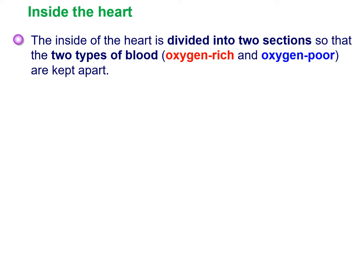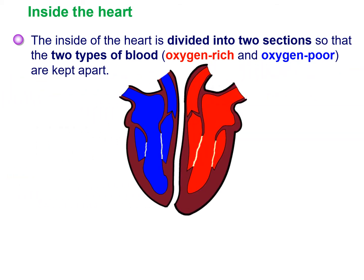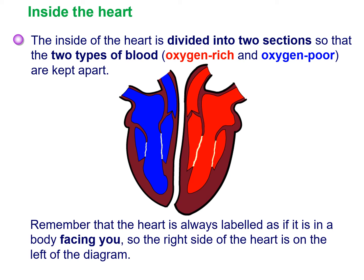Inside the heart it's divided into two sections so that this blood does not mix, and we're keeping with those same colours for the oxygen-rich and oxygen-poor sides. Remember that the heart is always labelled as if it is in a body facing you, so the right side of the heart is on the left side of the diagram. If you're struggling, pick up your diagram, place it on your chest, and you'll realise which side is which.